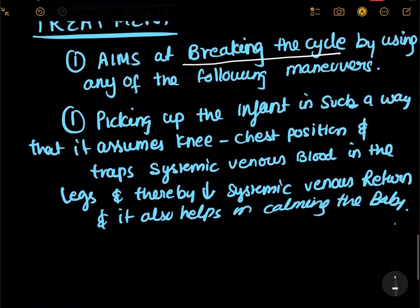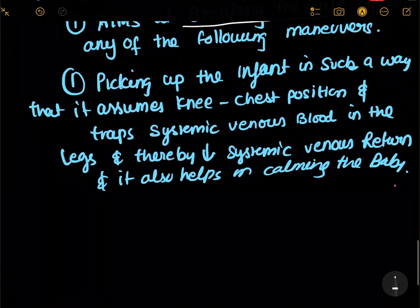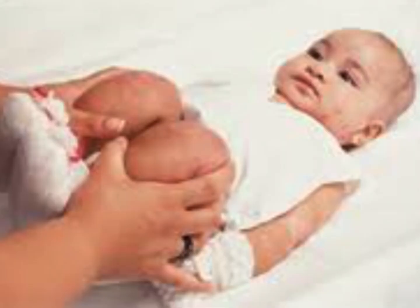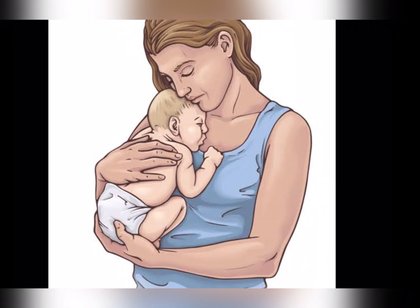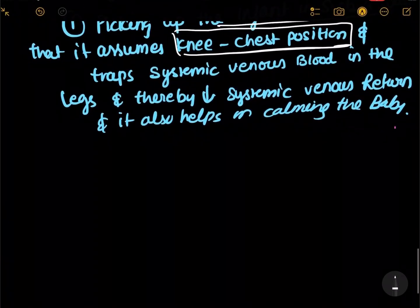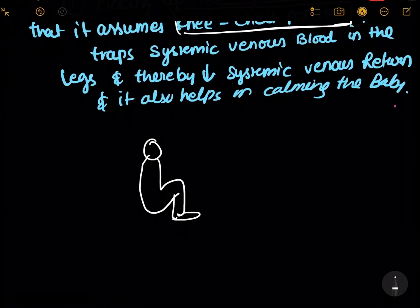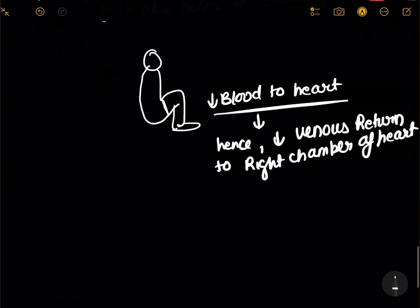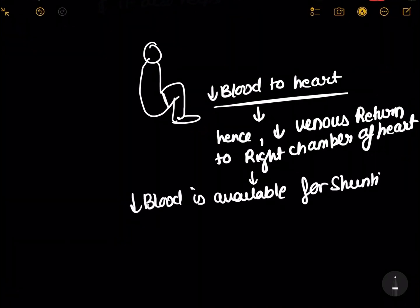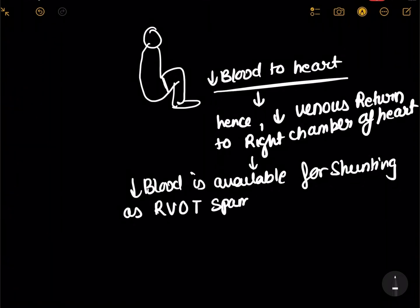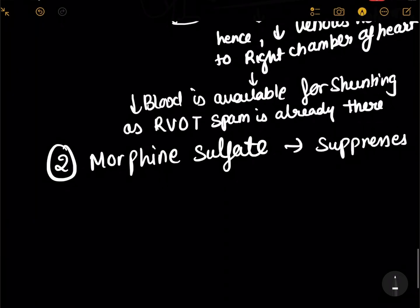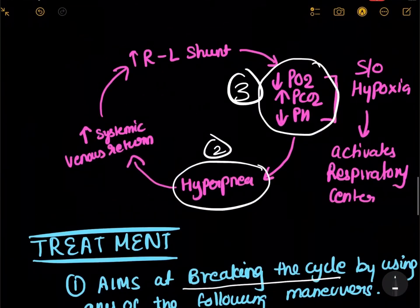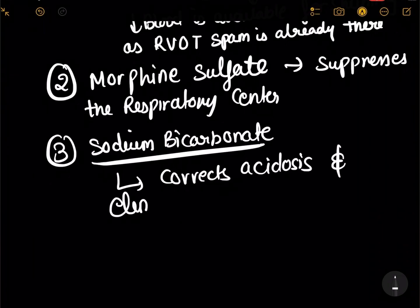To treat a tet spell, we need to break this vicious cycle. The first step is to pick the infant so it assumes a knee-chest position — the photo depicts how to do this. By flexing the knee, there is decreased systemic venous return to the right side of the heart, decreasing the burden on the right ventricle and reducing blood available for shunting, since the RVOT obstruction is still present. We also give morphine sulfate, which decreases respiratory center stimulation, and sodium bicarbonate, which corrects acidosis and decreases its stimulating effect.